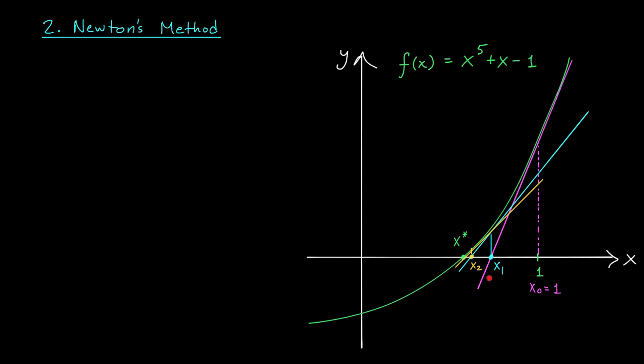So to figure out x1 from x0, we first need to find the equation of this tangent line in pink. If you think back to your linear approximation formula, the tangent line is given by y equals f of x0, plus the slope of the tangent line, f prime of x0, times x minus x0. And of course, we're trying to figure out the value of x where my tangent line crosses the x-axis. That's going to be our x1.